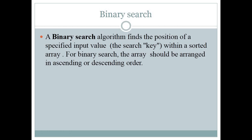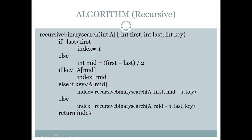A binary search algorithm finds the position of a specified input — for example, a key — within a sorted array. For binary search, the array should be arranged in ascending or descending order. We have to find out the key, meaning our specified value, from the given values. A condition that must be met is that your array must be sorted. If your data is not sorted, you have to apply a sorting algorithm first, and then you can find your specified value using binary search.